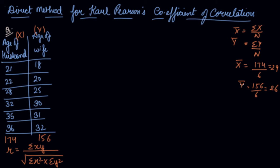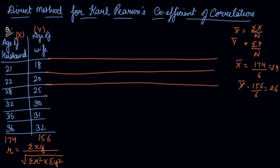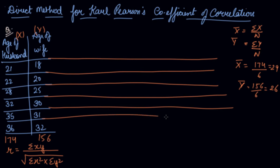Now we have taken out the mean of x series and mean of y series. Now what we will do, we will take the deviation from x series and y series. Now small x is x minus x bar.